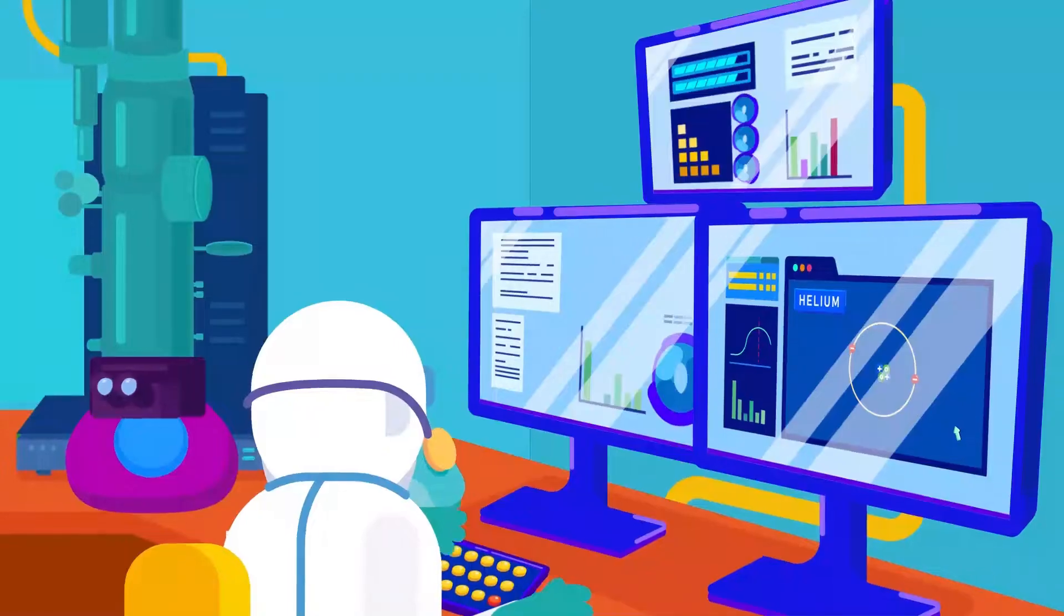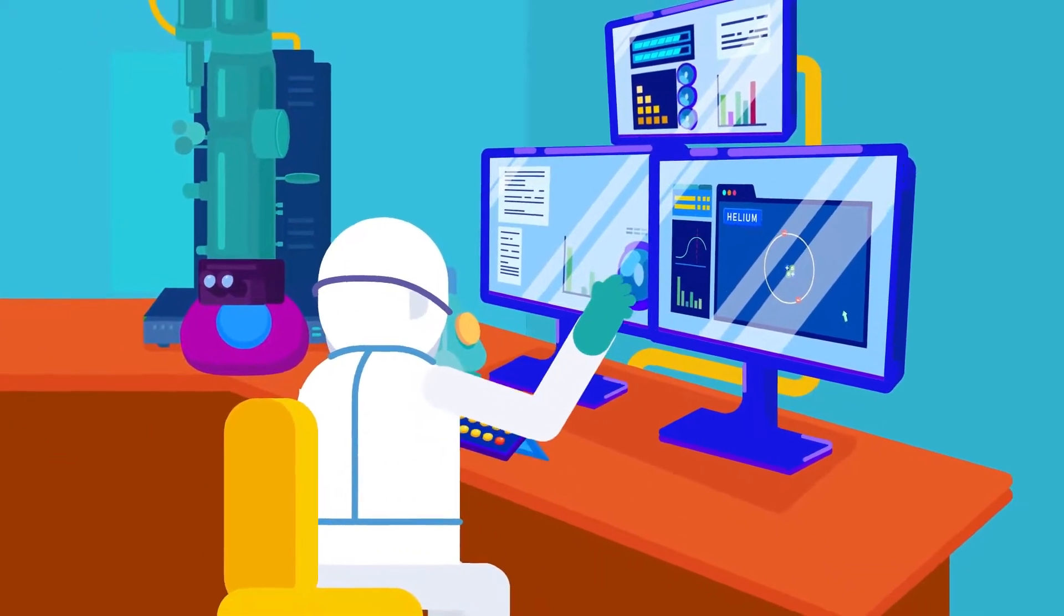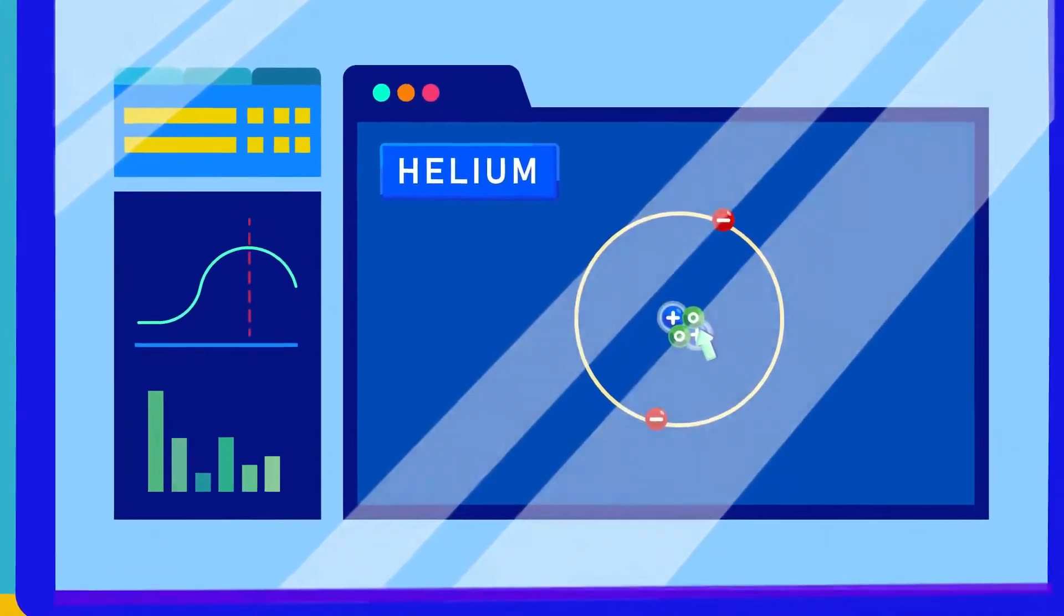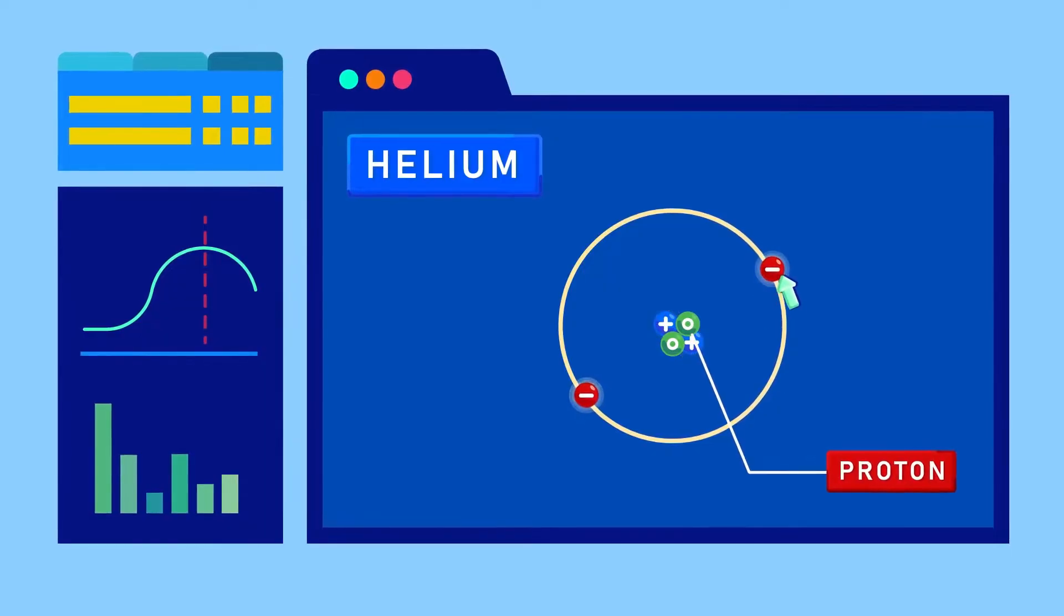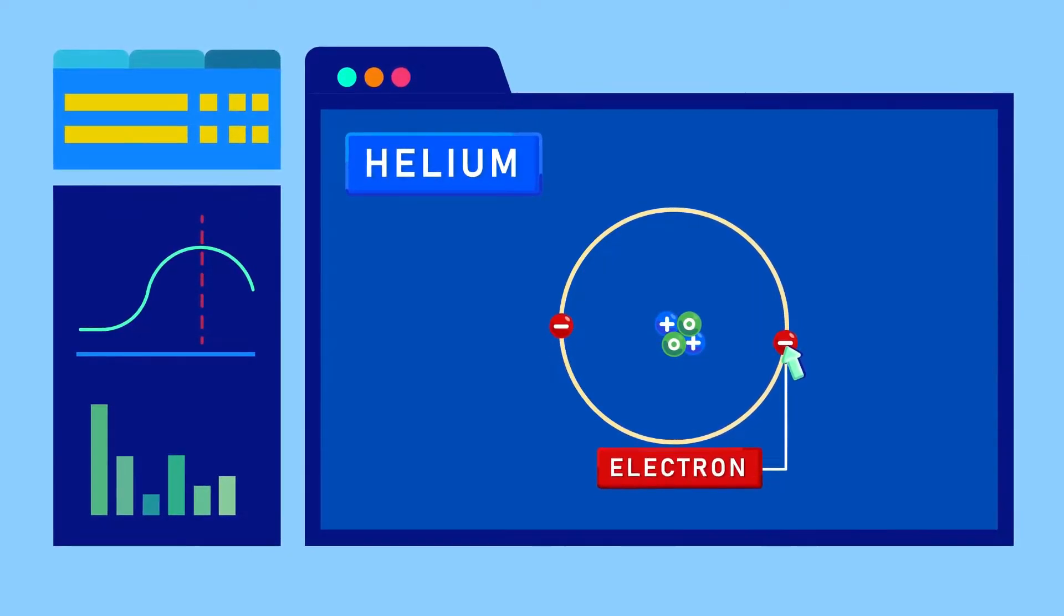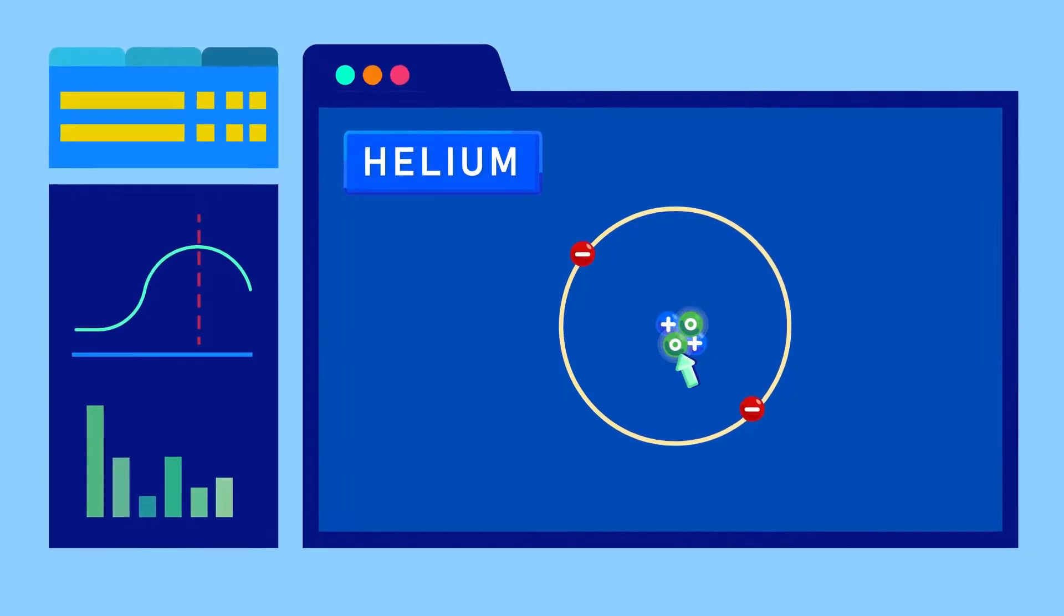Atoms are so small that we cannot see them with our naked eyes. The more fascinating thing is that atoms themselves are made of smaller particles, such as positively charged protons, negatively charged electrons, and some particles with no charge, called neutrons.